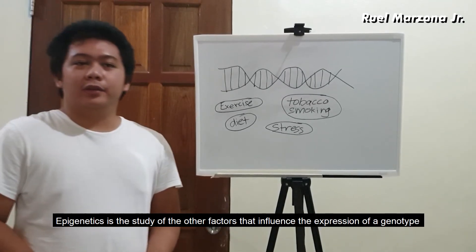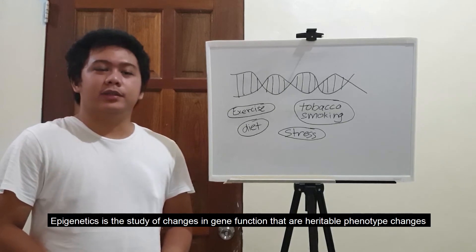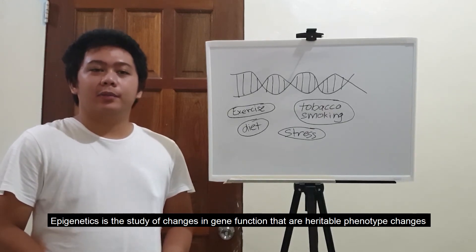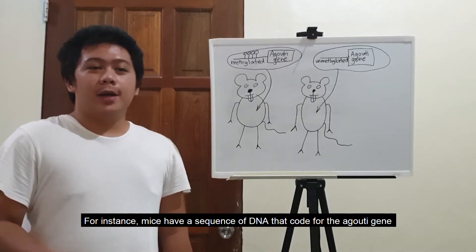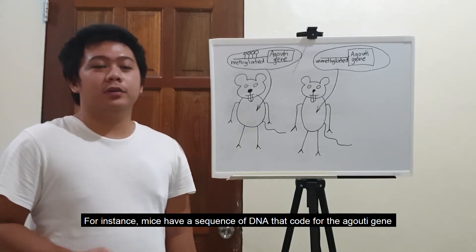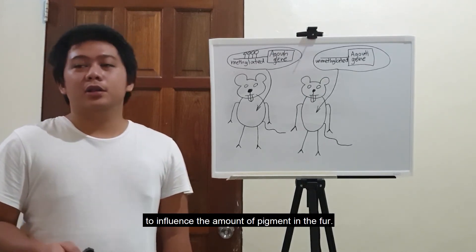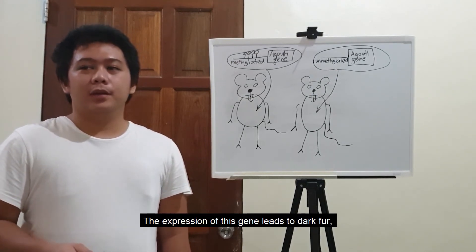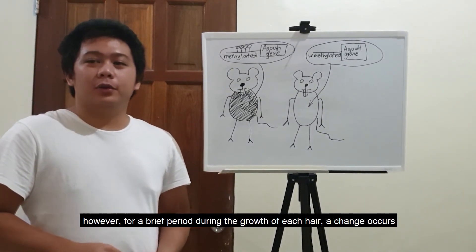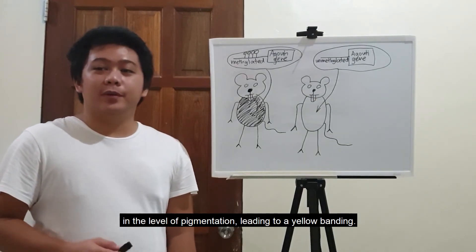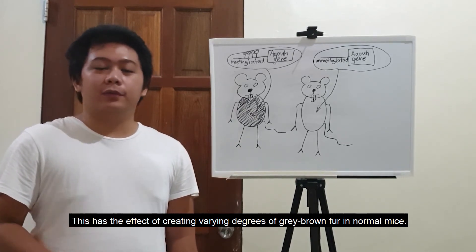Epigenetics is the study of other factors that influence the expression of a genotype into a particular phenotype — specifically, changes in gene function that are heritable phenotypic changes which do not entail a change in DNA sequence. For instance, mice have a sequence of DNA with code for the agouti gene, which dictates the fur color of mice by working on the melatonin receptors at the hair follicle to influence the amount of pigment in the fur. The expression of this gene leads to dark fur; however, for a brief period during the growth of each hair, a change occurs in the level of pigmentation, leading to a yellow banding, creating varying degrees of grey-brown fur in normal mice.